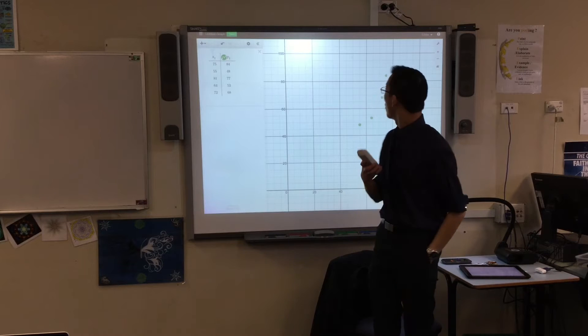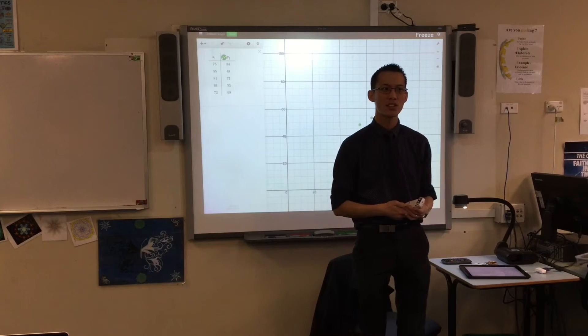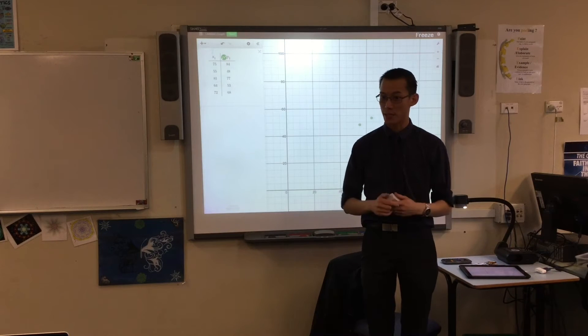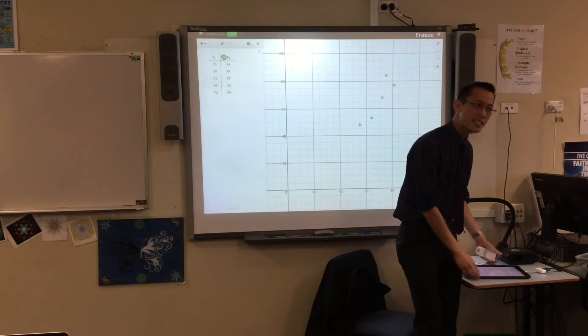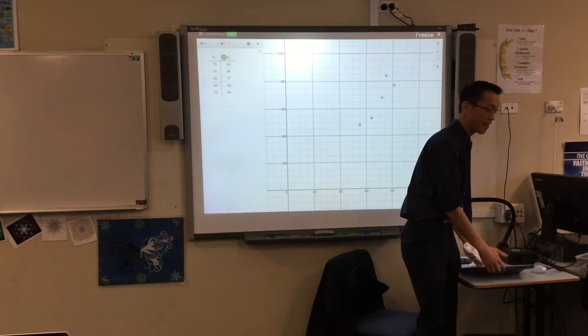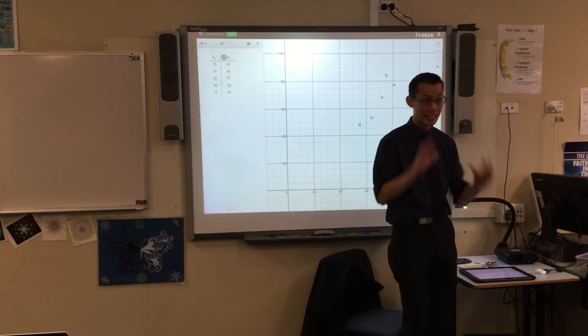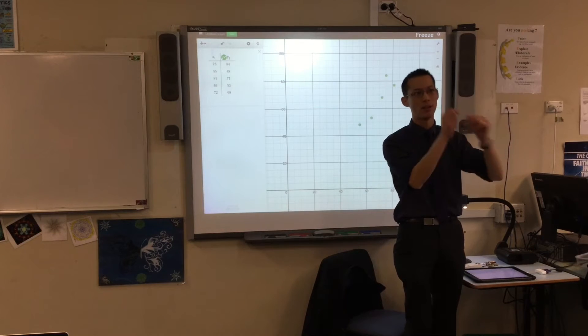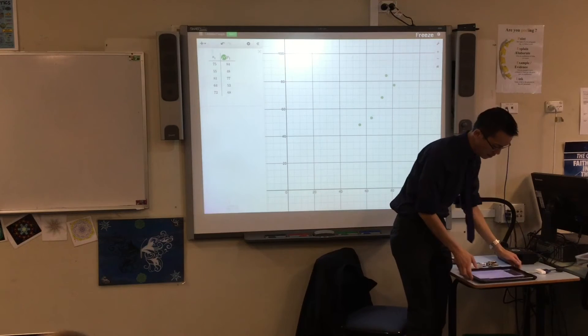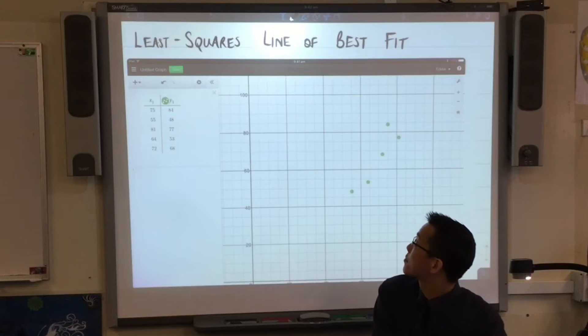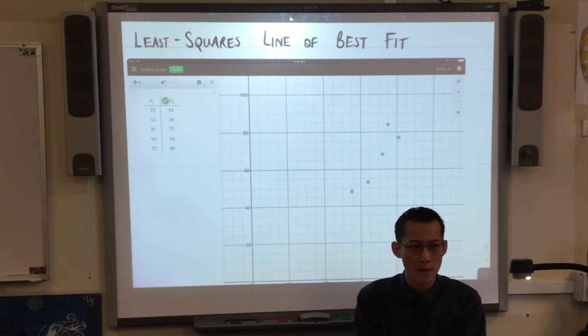It's called the least squares line of best fit. I'll say that again, the least squares, as in L-E-A-S-T, least squares line of best fit.